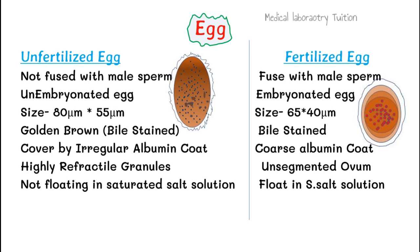The unfertilized egg does not float in saturated salt solution. In a tube with saturated salt solution — a solution fully saturated with salt where no more salt can dissolve — when we add a stool sample, the unfertilized eggs are heavier than the solution and sink to the bottom. The fertilized eggs are lighter and float to the surface, where we can collect them onto a slide and examine them under the microscope. This is called the concentration flotation technique.